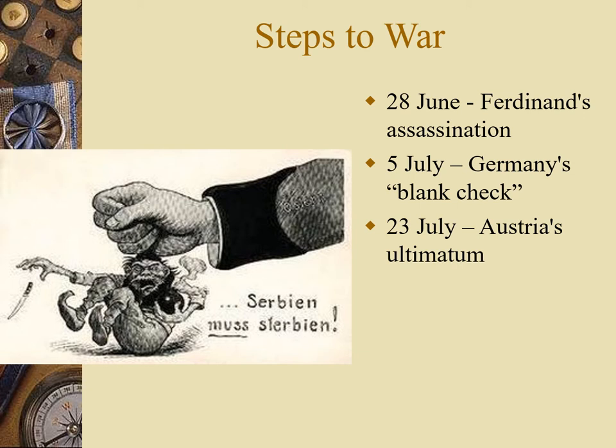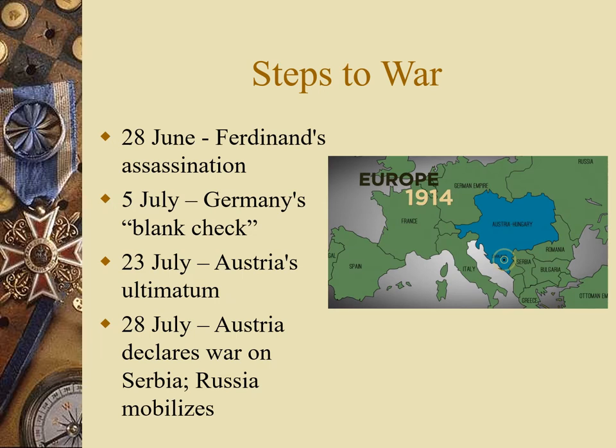Austria offered an ultimatum to Serbia: 'Your guy killed our guy — you need to surrender to us, or we'll declare war.' Five days later, Austria declared war on Serbia with Germany behind them saying 'keep doing it.' That called in Russia, which had ambitions in southeastern Europe and was ready to mobilize. Because of Germany and Austria's agreement, Germany then declared war on Russia on August 1st.